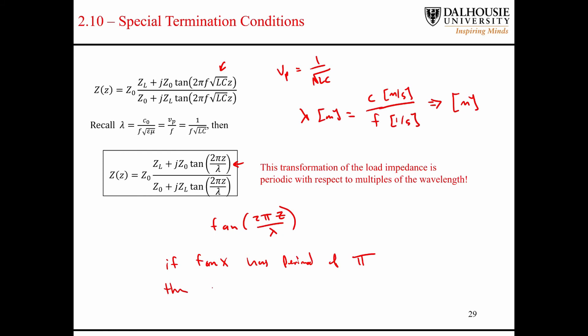We said that if tan of x has a period of pi, then the tan of 2 pi z over lambda has a period. So this is important. If you were to measure the impedance on a transmission line at two different points, they're not going to be equal to each other unless the distance between the two points is a special value, and that special value is lambda over 2, so half a wavelength.